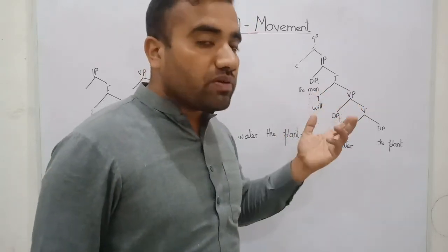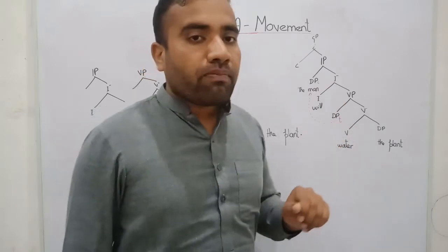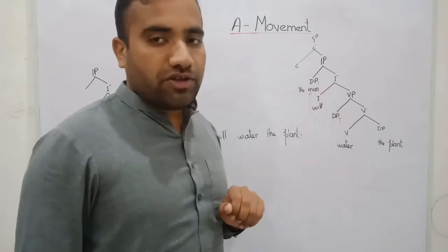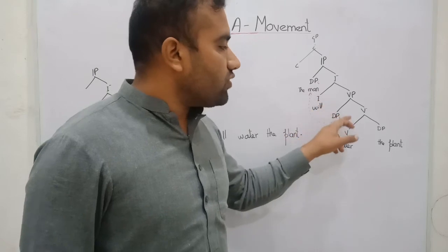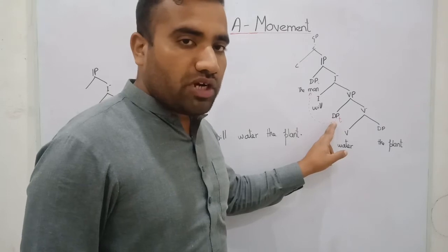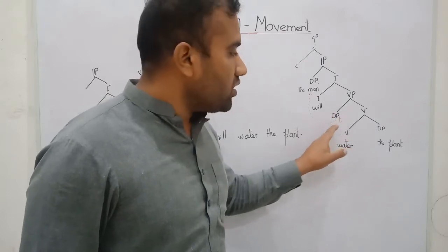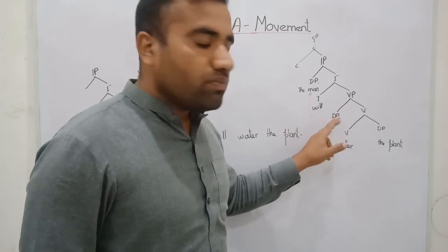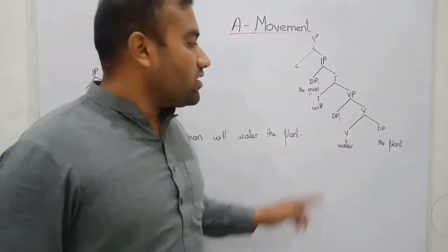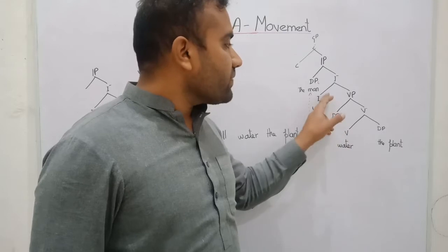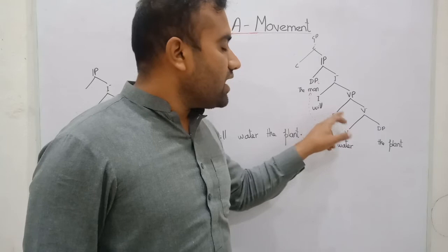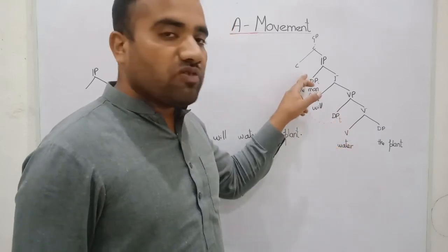The property of I is different from the property of V. The property of I is that it bears the EPP feature. And for EPP feature, in this lower domain, the A-bar position, this is the argument position. In this position, this DP has not been assigned case. And this I bears case feature.